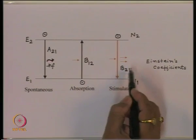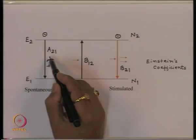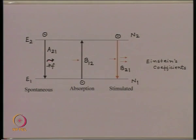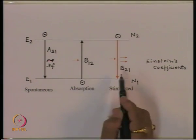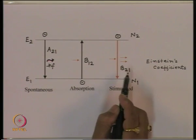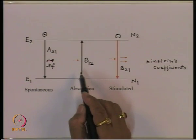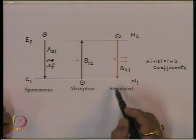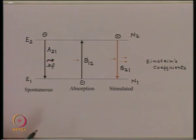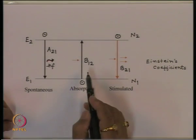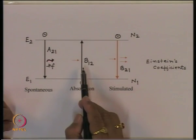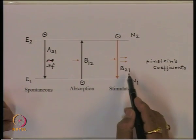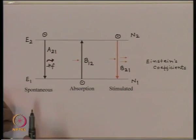Once this process starts taking place, the spontaneous emission does not have much scope to show up, and that is the reason we essentially concentrated only on two processes: the absorption process and the stimulated process. We then quantitatively wrote the equation for the growth of the photon flux as a function of time. We also saw that inside a material the probability of an upward transition and a downward transition in the presence of a photon is equal.